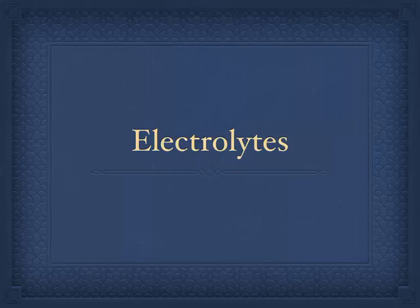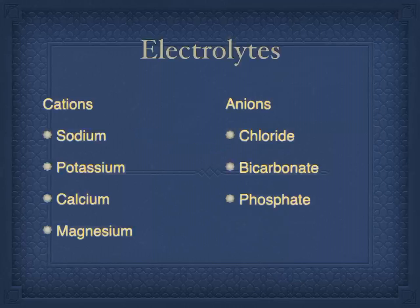A brief overview of some of the electrolytes found in the body. We break these into positive and negative electrolytes. An electrolyte is just an electrically charged particle in the body. Cations are positive ions and anions are negative ions.